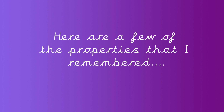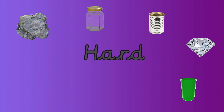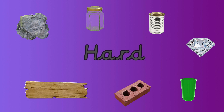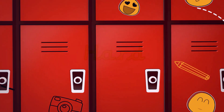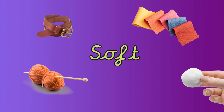Hard — like a piece of rock, a glass jar, a metal tin can, a diamond, a plastic cup, a brick, some wood, and a ceramic coffee cup. Soft — like wool, leather, fabric, and cotton.